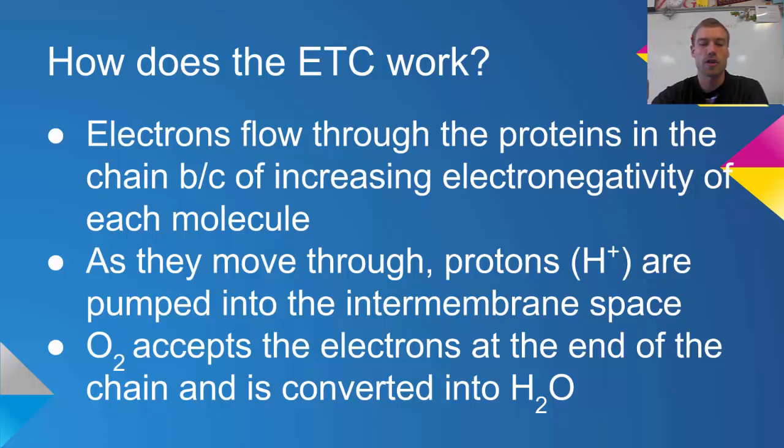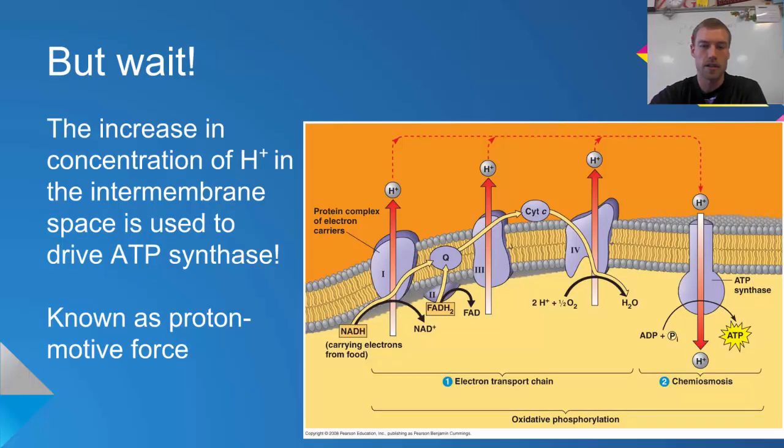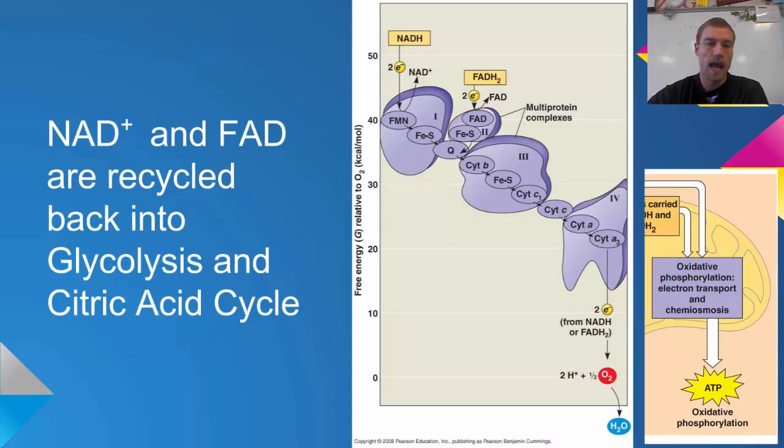The oxygen at the end of the electron transport chain is going to accept those electrons and be converted into H2O. Let's take a look at how this actually will happen.